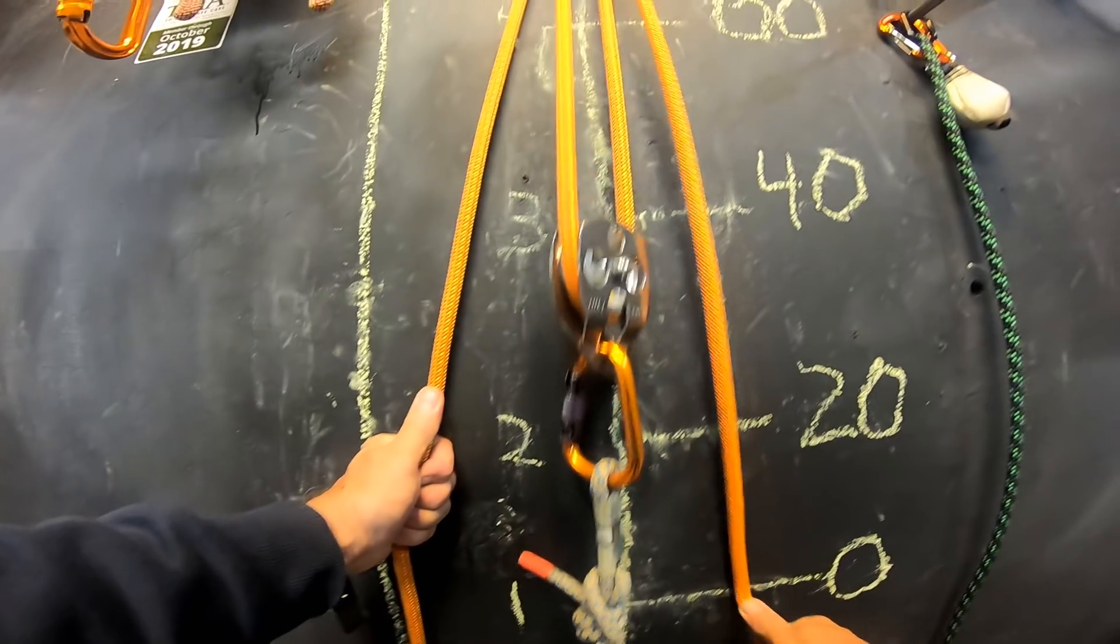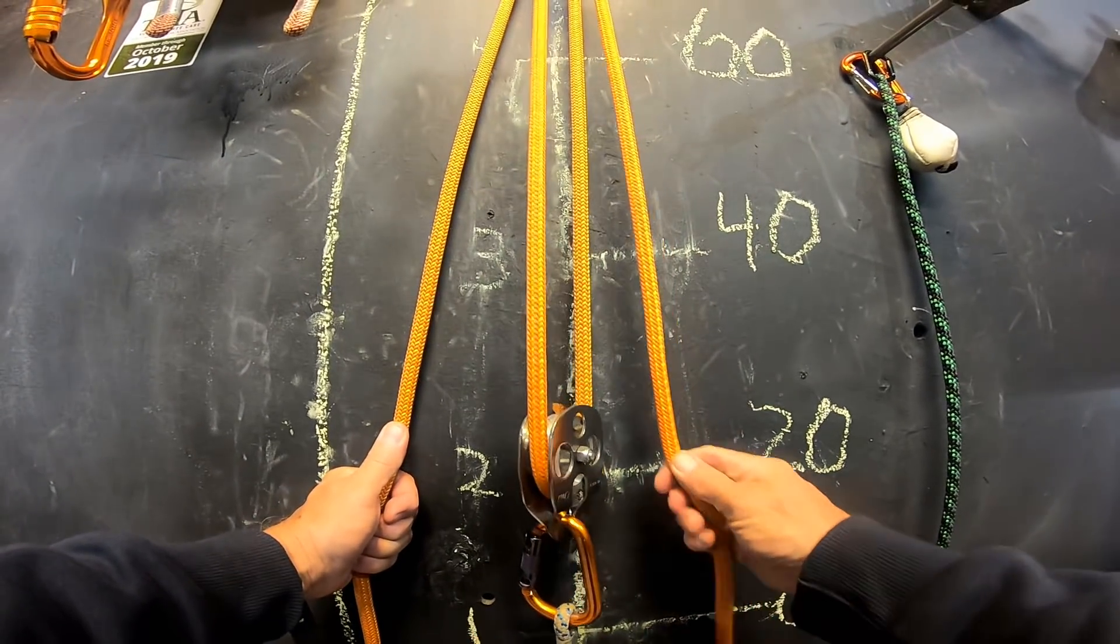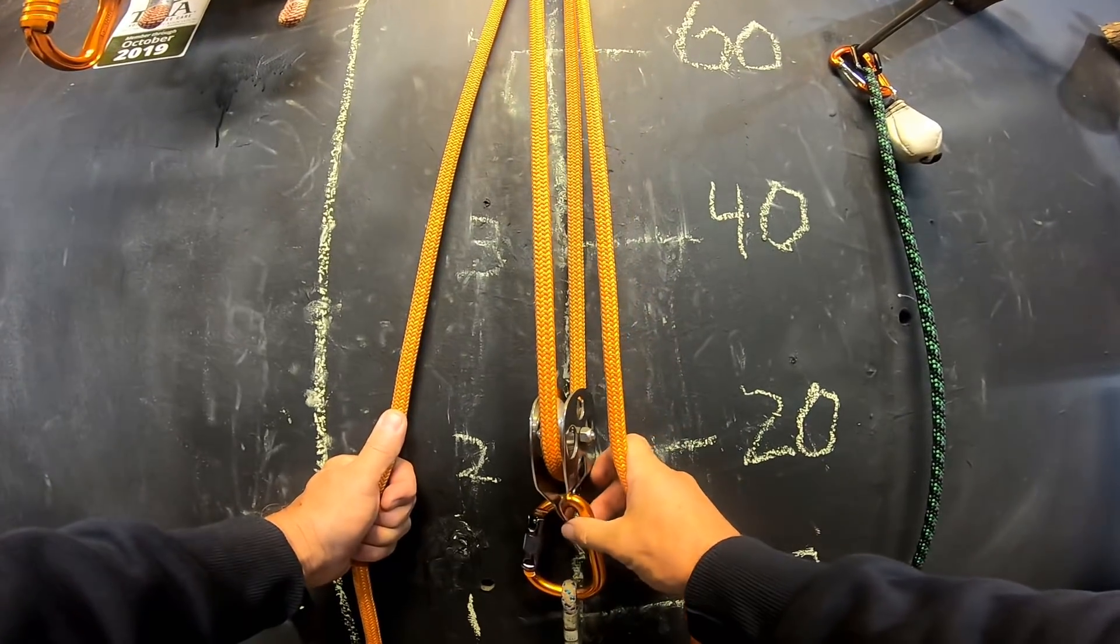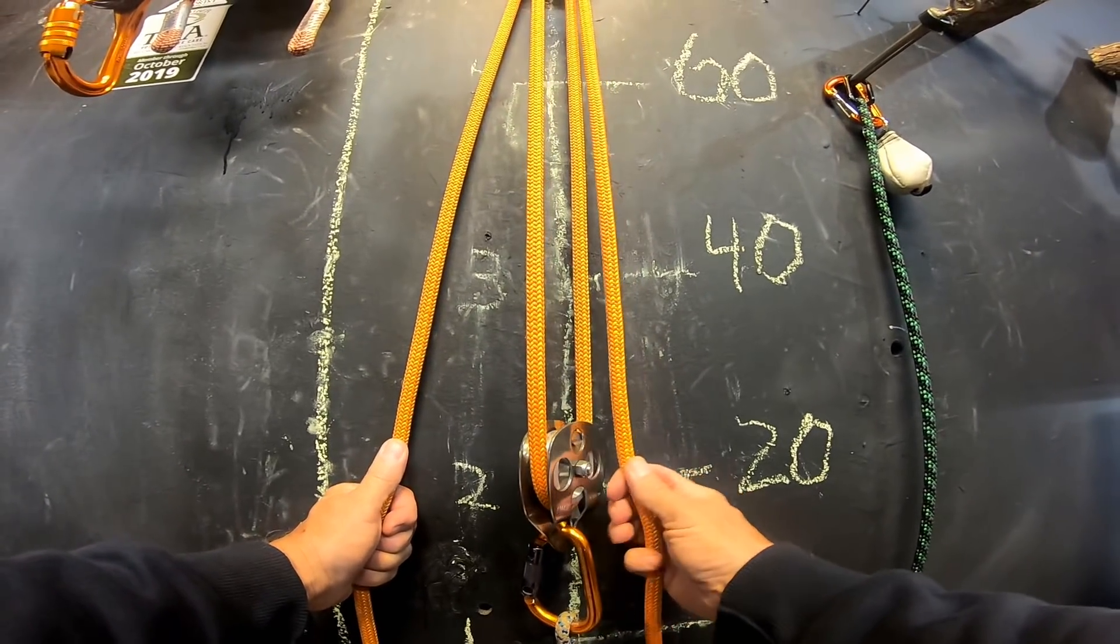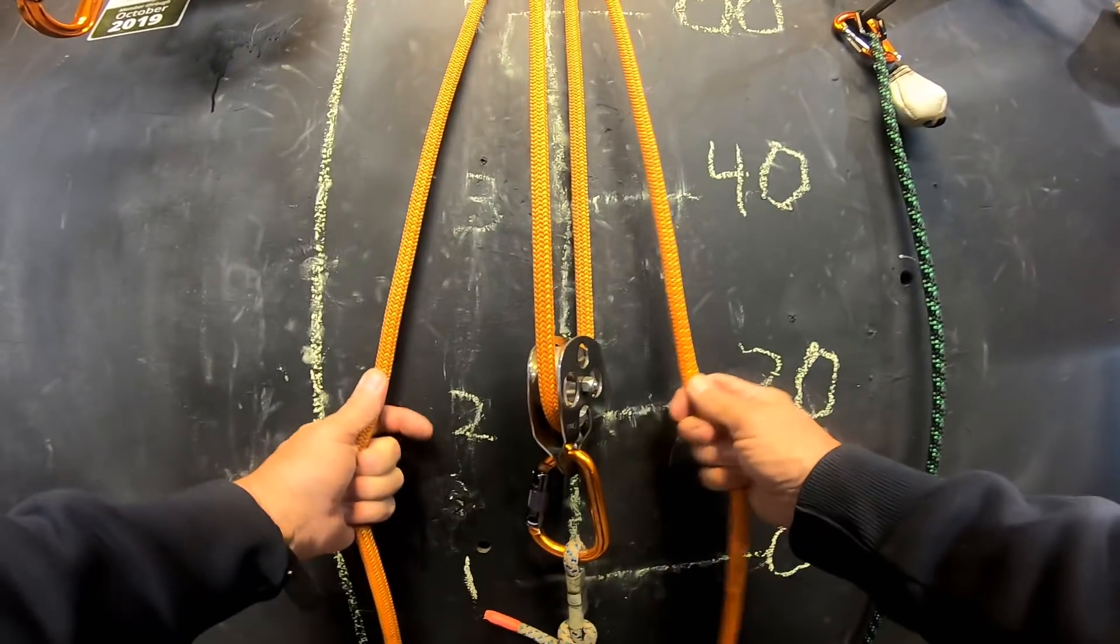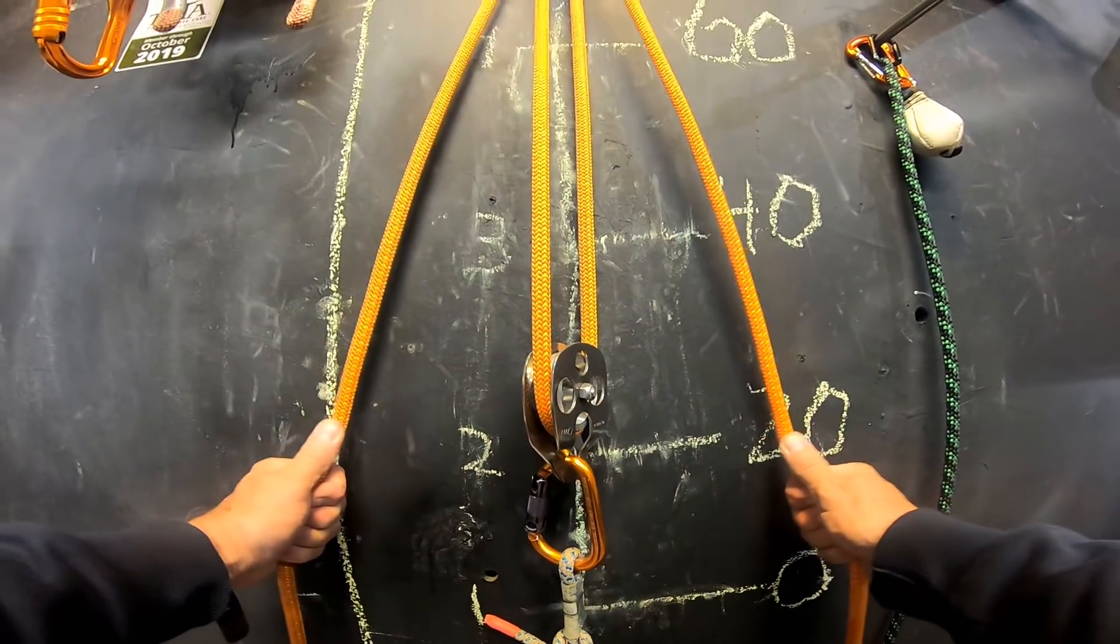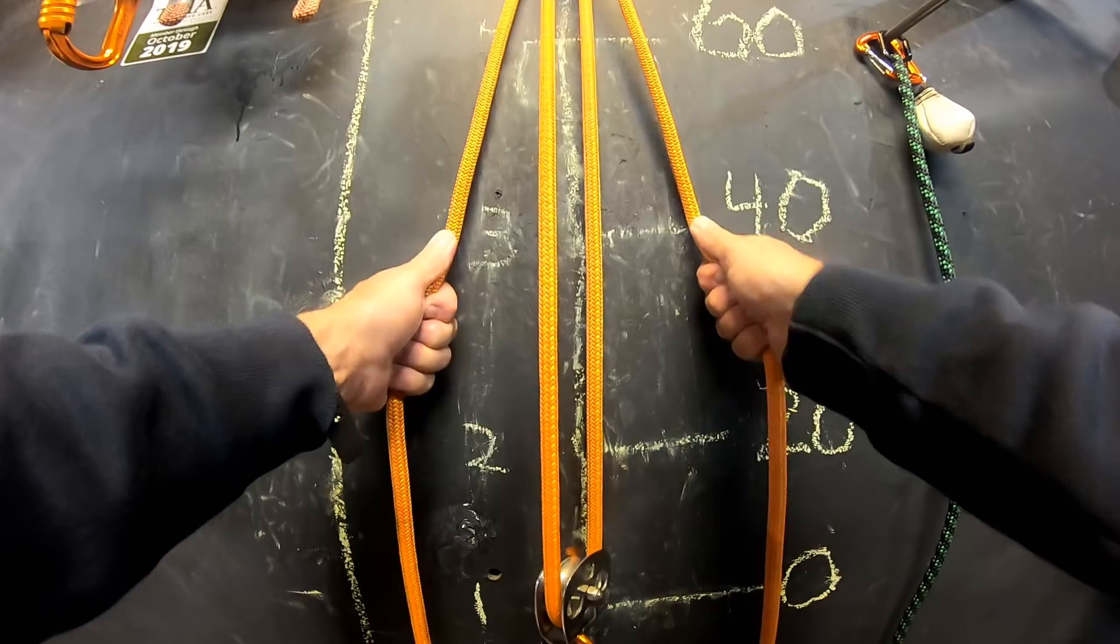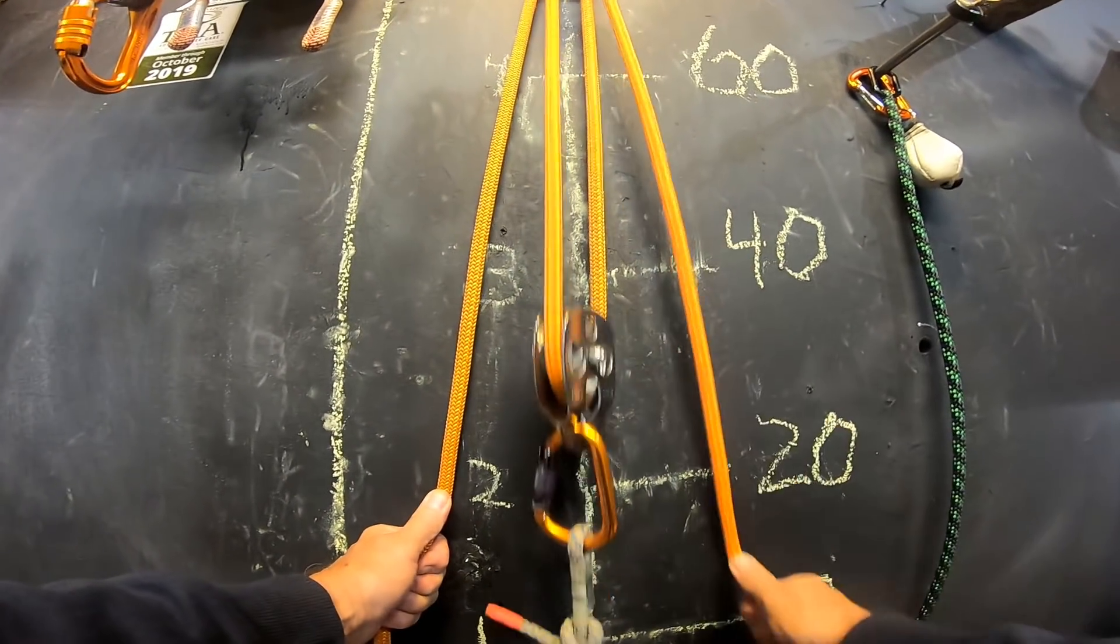So two-to-one mechanical advantage because you're a hauling system. And not to get this confused, but again, that moving pulley thing, if this was a climber going up the rope, it'd be a three-to-one mechanical advantage and you'd be climbing. But that's a whole different kind of a deal. But this stuff is just intriguing to me. So no mechanical advantage, two-to-one mechanical advantage.